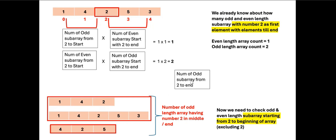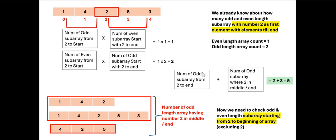We take the sum of: the number of odd subarrays starting with 2 going to the end (computed earlier), plus the number of odd subarrays where 2 is in the middle or end (just calculated). That gives 2 plus 3 equals 5. So element 2 appears in 5 odd length subarrays total, and we multiply 2 by 5 to get its contribution to the total sum. This is the pattern we apply to our solution.